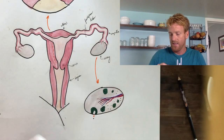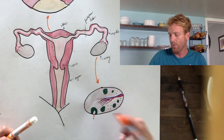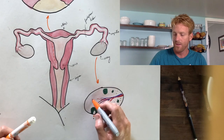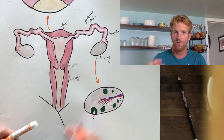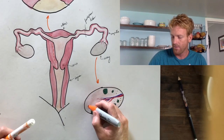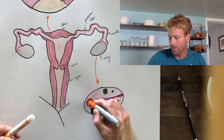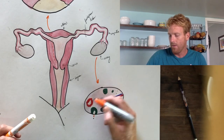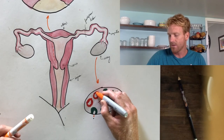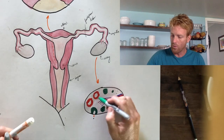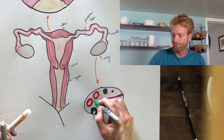After the egg gets released, that follicle is going to turn into another structure called the corpus luteum, or the yellow body. Both the follicle and the corpus luteum — which is left over after ovulation — are really important in the production of ovarian hormones like progesterone and estrogens. We'll talk about that next time with the menstrual cycle. The yellow body is literally just leftover pieces of the follicle after ovulation occurs, and it has a completely different role in female reproduction. We'll also see some other immature follicles that just aren't developing yet.